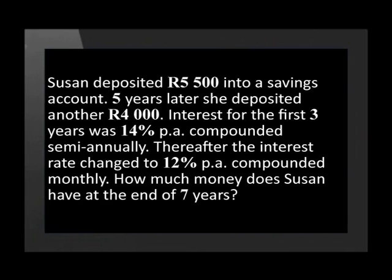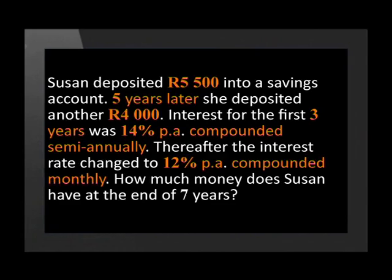Let's have a look at an example. Susan would like to use her savings to do some travelling. She deposited 5,500 rand into a savings account. Five years later, she deposited another 4,000 rand into the account. Interest for the first three years was 14% per annum, compounded semi-annually. Thereafter, the interest rate changed to 12% per annum, compounded monthly. How much money does Susan have at the end of seven years? The easiest way to tackle these questions is to put all the information on a timeline.